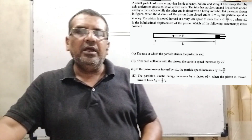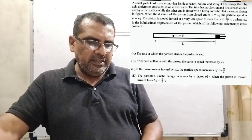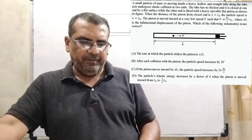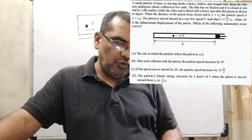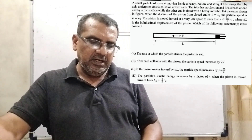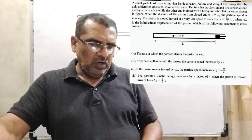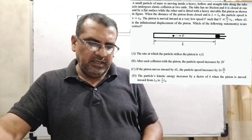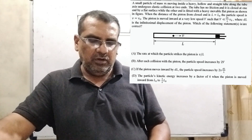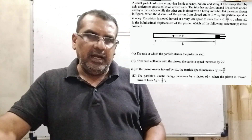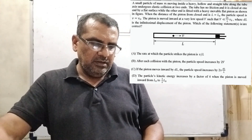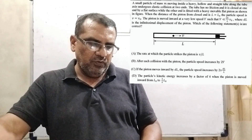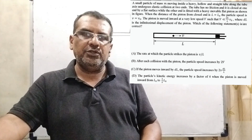Multiple choice questions are given. Option A: the rate at which the particle strikes the piston is v/L. Option B: after each collision with the piston, the particle speed increases by 2V. Option C: if the piston moves inward by dL, the particle speed increases by 2v·dL/L. Option D: the particle's kinetic energy increases by a factor of 4 when the piston is moved inward from L₀ to L₀/2.